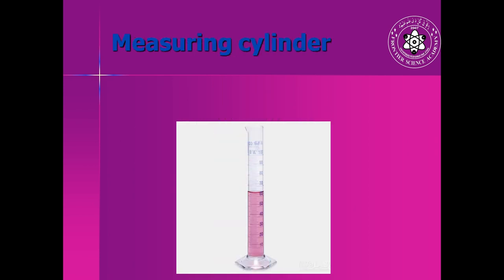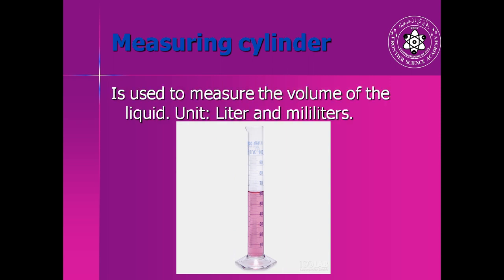Another instrument is called measuring cylinder. This instrument is used to measure the volume of liquid. The volume of liquid is measured in units liter or milliliter - liter is a bigger unit and milliliter is a smaller unit. One thousand milliliters is equal to one liter. In this diagram you can see a graduated measuring cylinder with volume of 100 ml. You can see there is a liquid and this liquid has a volume of almost 60.